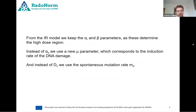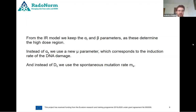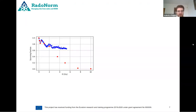From the induced repair model, the alpha and beta parameters are good because they have biological meaning. Instead of the alpha-s parameter, we use an induction rate of DNA damage, which is also connected to the starting slope. Instead of the dc parameter, we use the spontaneous mutation rate, which can be connected to the local minimum. Running a simulation on a dataset, we get a fairly good fit to the low-dose region.